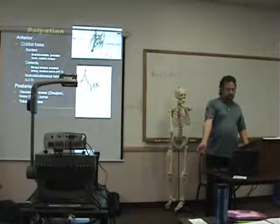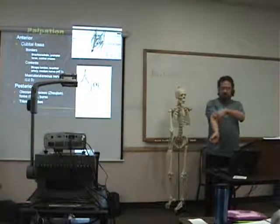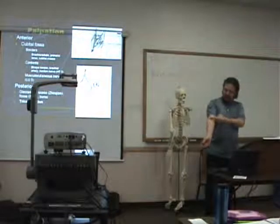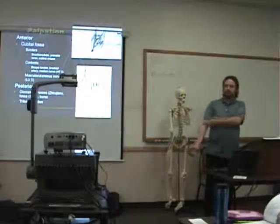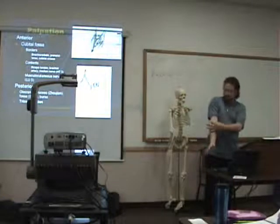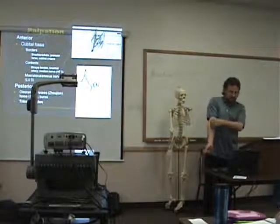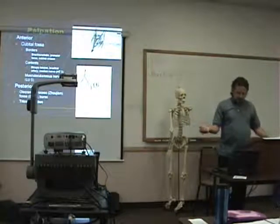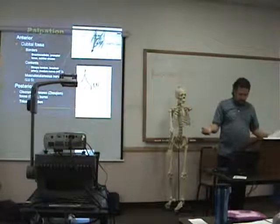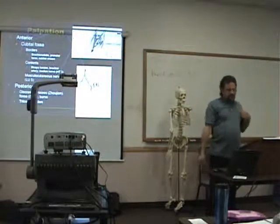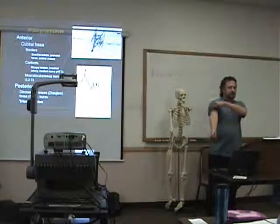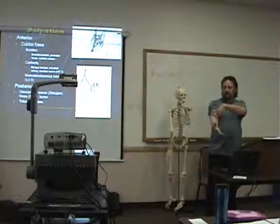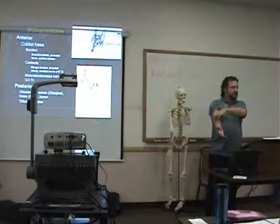Then here we have the cubital fossa. The borders of the cubital fossa — as you remember — are the brachioradialis, the pronator teres, and the cubital crease, which is basically just that crease where your elbow bends. That forms that triangle. Inside of that, you have the biceps tendon, the brachial artery, and then the median nerve. Where it meets the musculocutaneous nerve, that's what I was talking about before — an extension of that nerve is actually the lateral cutaneous nerve of the forearm, which is a continuation of the musculocutaneous nerve.